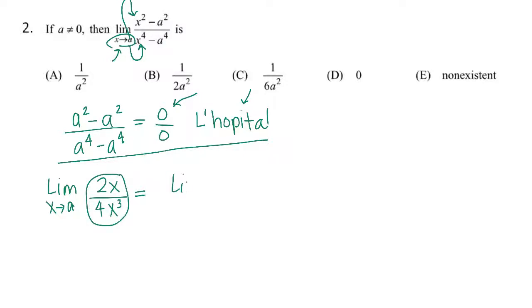So let's go ahead and simplify this. We have the limit as x approaches A, and let's see, what's left in the numerator? Looks like a 1, isn't it? And in the denominator we have 2x squared. And now let's plug in A, so you get 1 over 2a squared.